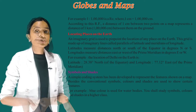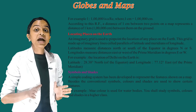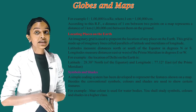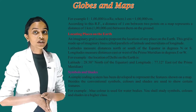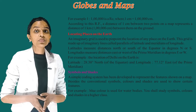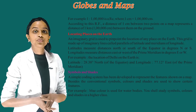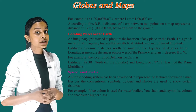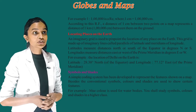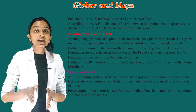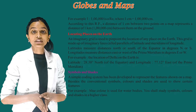Location of places on the earth: An imaginary grid is used to pinpoint the location of any place on the earth. This grid is made up of imaginary lines called parallels of latitude and meridians of longitude. Latitudes measure distance north or south of the equator in degrees N or S. Longitudes measure distances east or west of the prime meridian in degrees E or W. For example, the location of Delhi on the earth is latitude 28.38 degrees north of the equator and longitude 77.12 degrees east of the prime meridian.